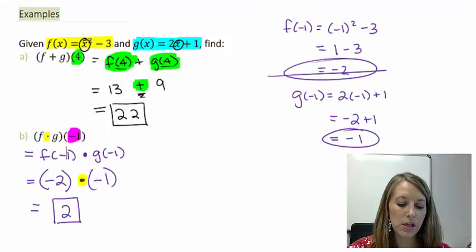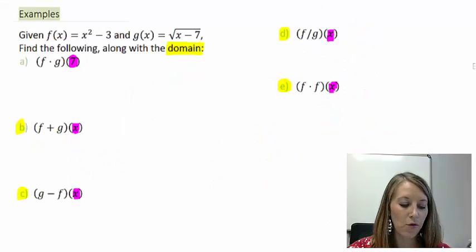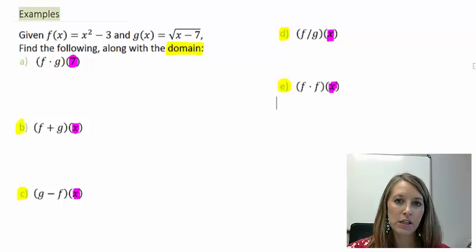I also introduced a few more examples. f of x equals x squared minus 3 and g of x equals square root of x minus 7. Then I suggested that you do all five of these parts on your own and see if you come up with the right answer.